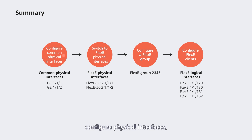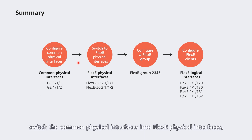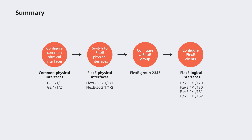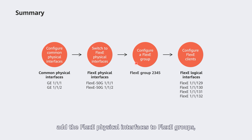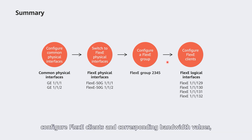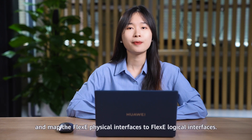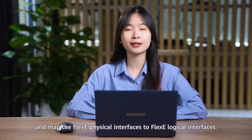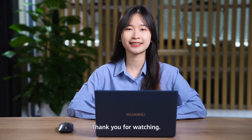To summarize the key configuration points: configure physical interfaces by switching common physical interfaces into flexi physical interfaces, add the flexi physical interfaces to flexi groups, configure flexi clients and corresponding bandwidth values, and map the flexi physical interfaces to flexi logical interfaces. Thank you for watching.